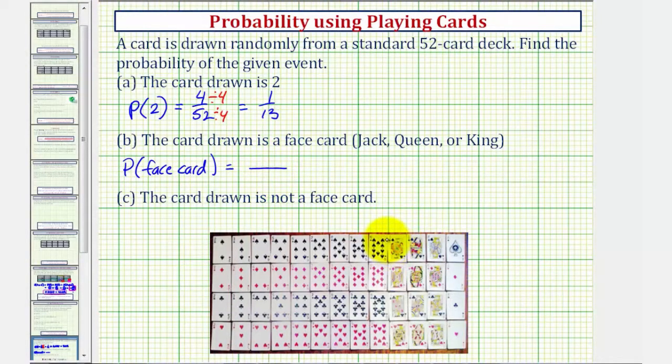The face cards are the Jacks, Queens, and Kings. There are 12 face cards. So the probability of a face card is 12/52.